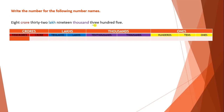In the Ones period they are given 305, so I wrote 305 in the Ones period. In the Thousands period they are given 19, so I wrote 19 in the Thousands period. In the Lakhs period they are given 32, so I wrote 32 in the Lakhs period. And they are given 8 in the Crores period, so I wrote 8 there.